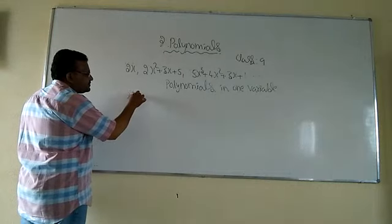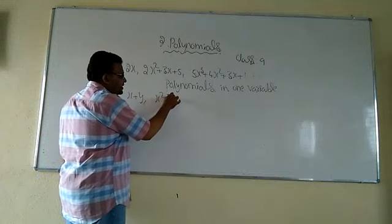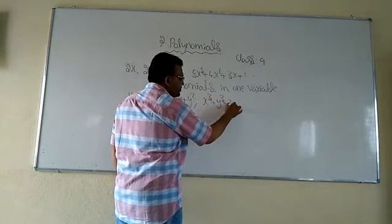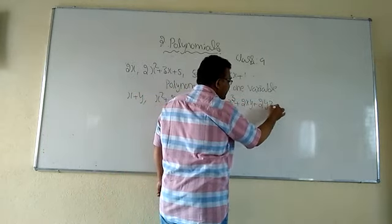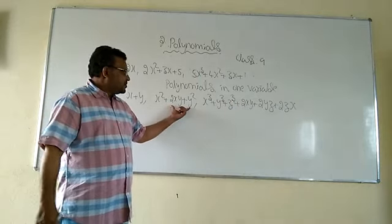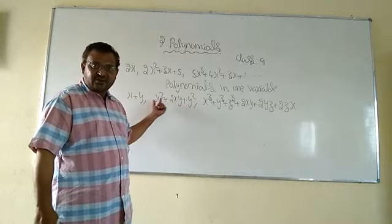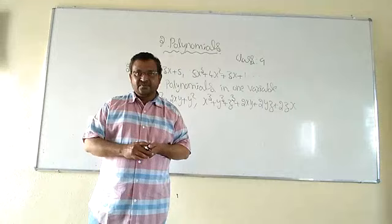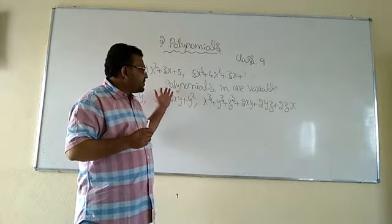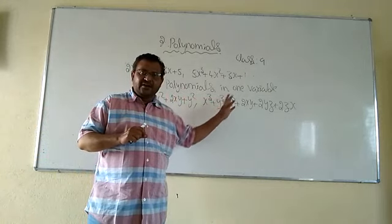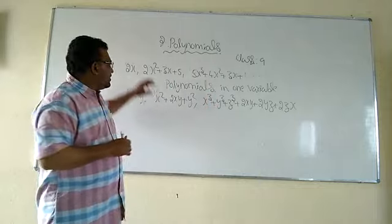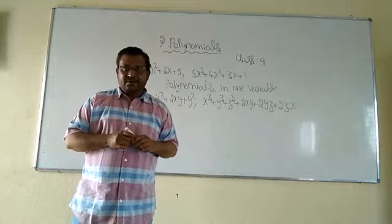For polynomials in two variables, examples include: x plus y, x squared plus 2xy plus y squared. For three variables: x cubed plus y cubed plus z cubed plus 2xy plus 2yz plus 2zx. Here x and y are used for two variables, and x, y, and z for three variables. So the number of variables used defines whether it is a polynomial in one, two, or three variables. In this chapter we will learn only about polynomials in one variable.